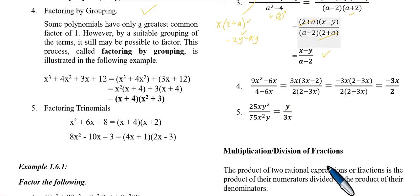Next, 9x square minus 6x. The obvious variable factor is x. Then for 9 and 6, the factors of 9 are 3 times 3 or 9 times 1. And 6 is 3 times 2 or 6 times 1. So the common factor is 3.